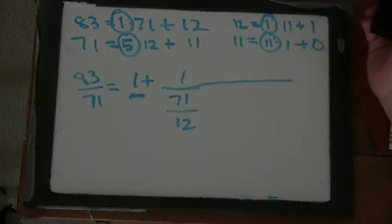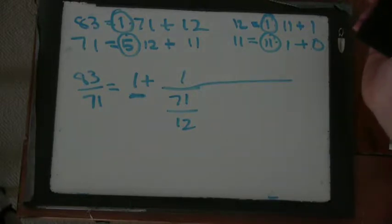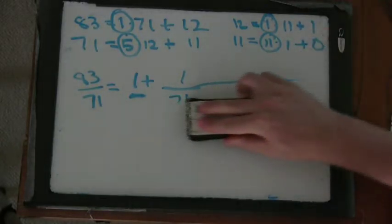And what happens to 71 over 12? So you have to rationalize it, which it's already rational. So you split it. And what does it split into? 5, so you have 5 plus 11 over 12.